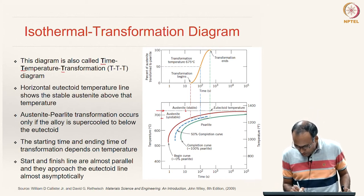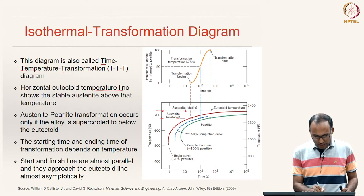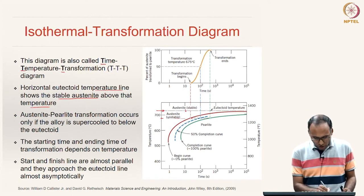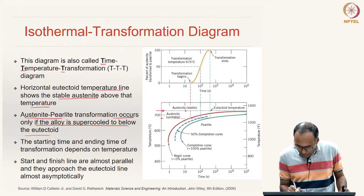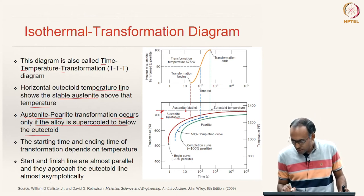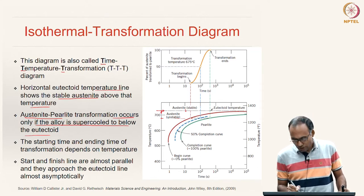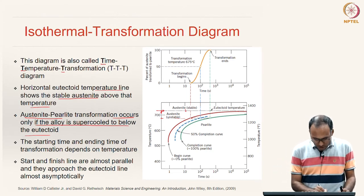When cooling below the eutectoid temperature we are doing non-equilibrium cooling because austenite is not stable there. The austenite-to-pearlite transformation occurs only if the alloy is supercooled below the eutectoid; otherwise the transformation will not occur. You need some undercooling to start the transformation, and the start line approaches the eutectoid temperature asymptotically — it may not touch the eutectoid temperature at all.